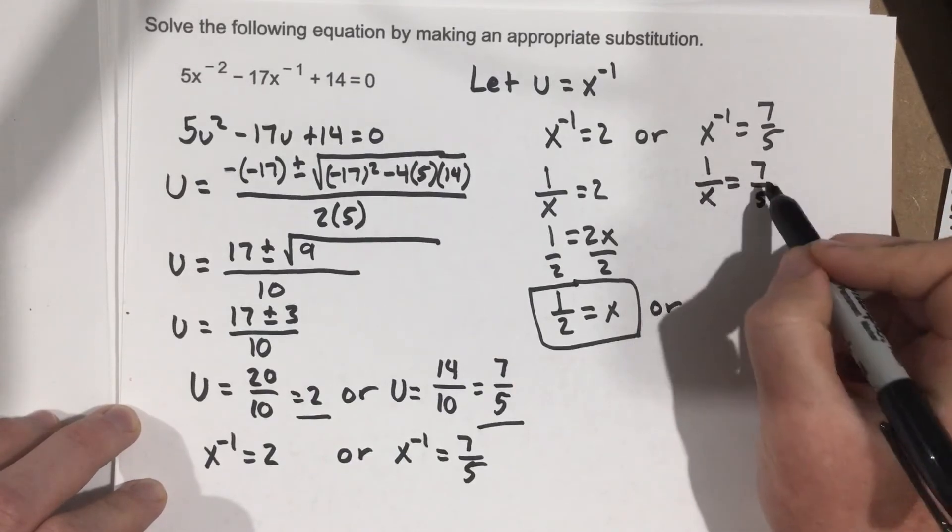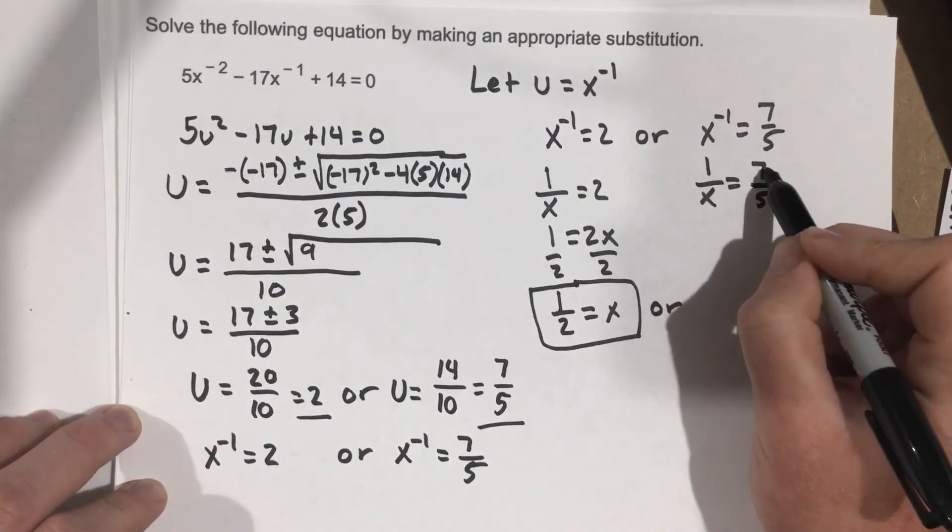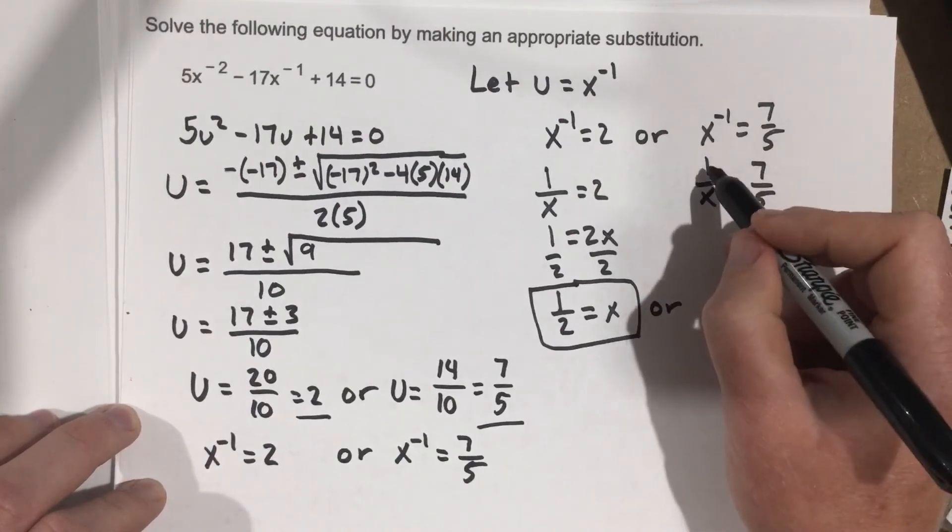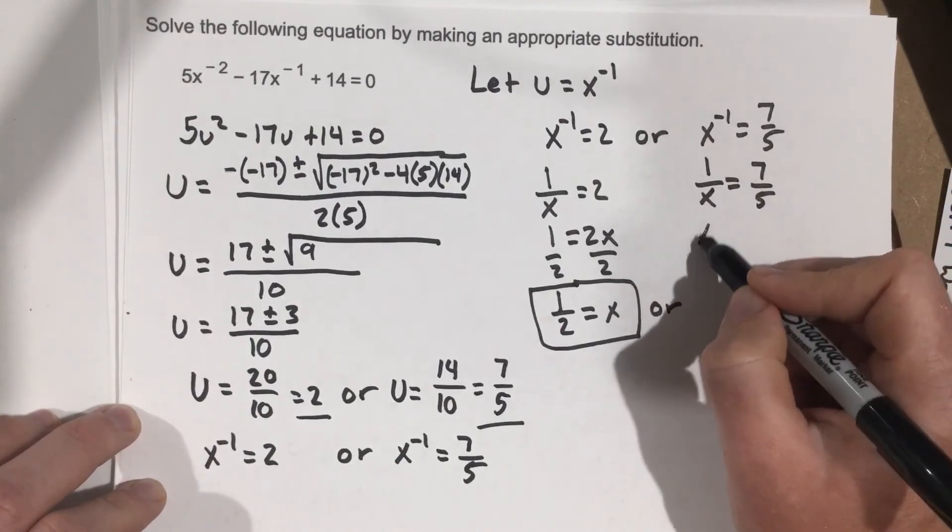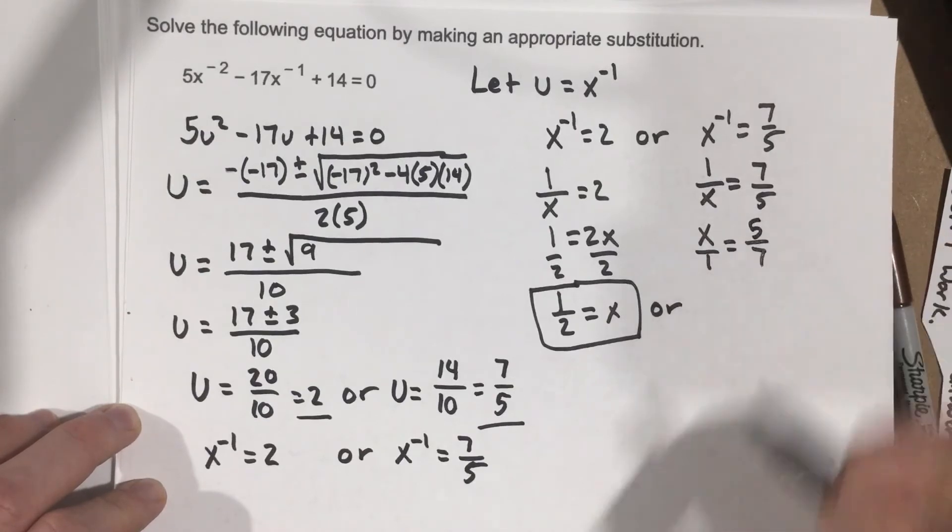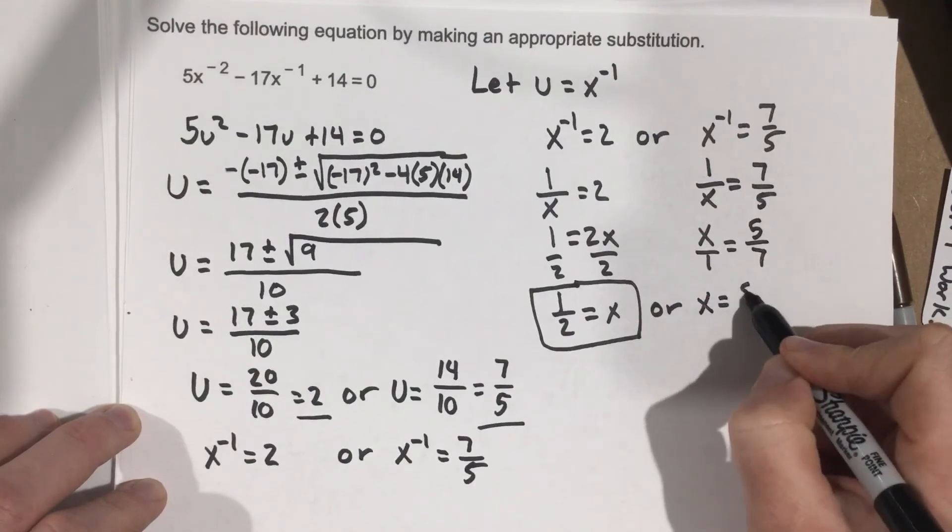if we just flip this fraction and flip this fraction, the sides stay the same. So I'm going to flip 1 over x to just say x over 1 equals 5 over 7. And then that's obviously x equals 5 over 7.